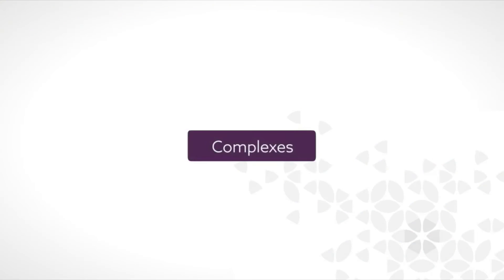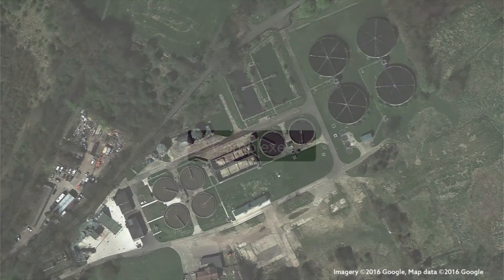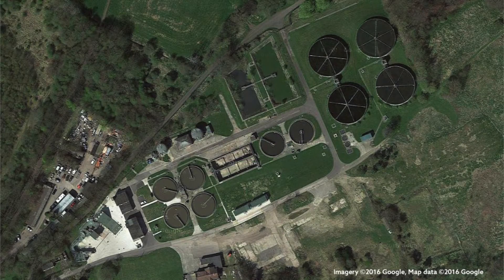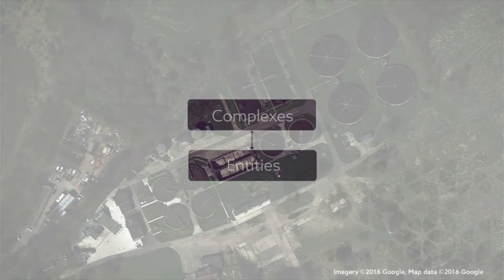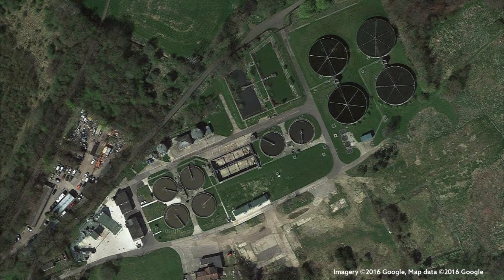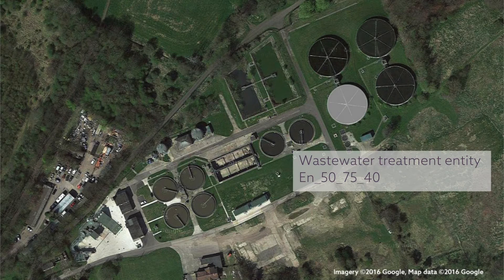Starting at the highest level with a complex such as a wastewater treatment plant, this covers the facilities for all that you need to cover that type of installation. Within that complex there are entities, and entities are major objects such as a building or a wastewater treatment structure.